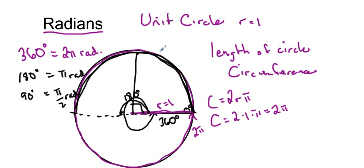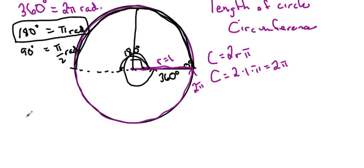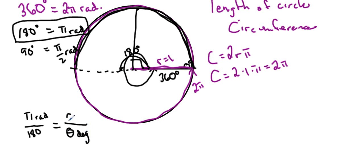We can see that whenever you want to convert a radian to degrees, it's actually a proportion or a fraction of whatever 360 is, which equals 2 pi; 180 equals pi; and 90 equals pi over 2. The key thing to remember is that 180 degrees equals pi radians. So whenever we want to convert a radian to degrees or a degree into radians, we can think of this proportion: pi radians is equal to 180 degrees, as whatever angle in degrees is to whatever angle we have in radians.